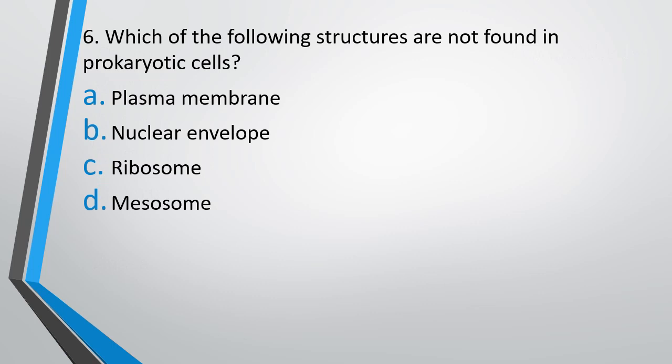Question No. 6. Which of the following structures are not found in a prokaryotic cell? Plasma membrane, nuclear envelope, ribosomes, or mesosomes. The correct answer is option B, that is nuclear envelope.